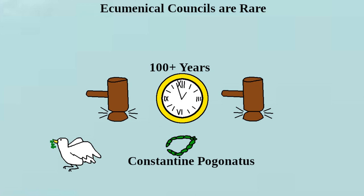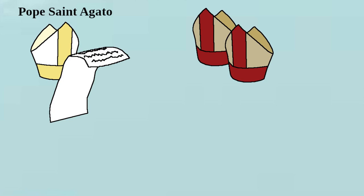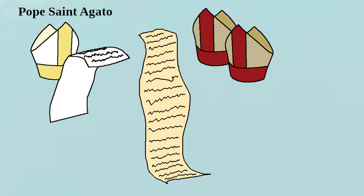He sent a letter to Pope Donus in 678 AD, but sadly, the pope was dead before he got the letter. The letter was received instead by his successor, Pope Saint Agato, who worked together with a number of other bishops over the next couple of years to compile a comprehensive assessment of the issues that the emperor had proposed dealing with at the council.